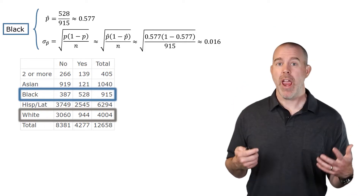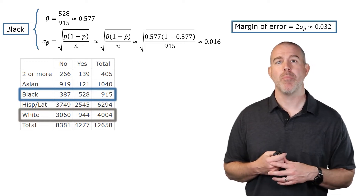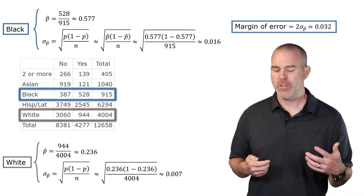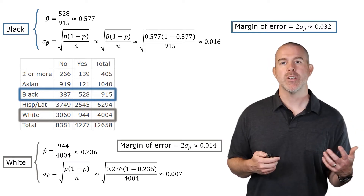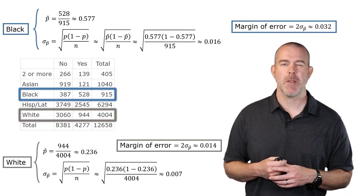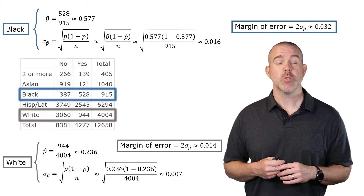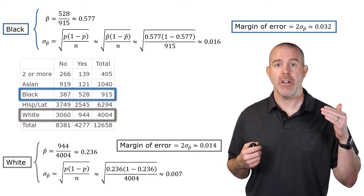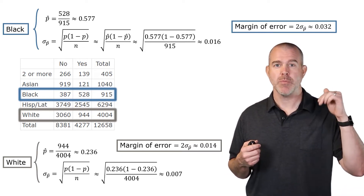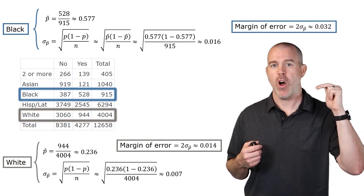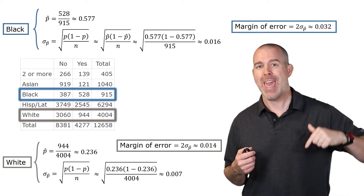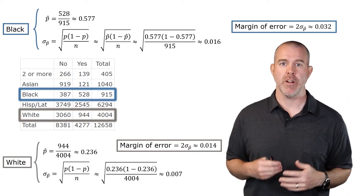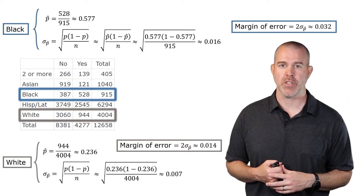So the margin of error for the black students' confidence interval is about 0.032, or 3.2%. For white students, the margin of error is about 1.4%. The reason it's smaller is the much larger sample size — since the standard deviation formula divides by n, a larger sample size gives a narrower interval and a smaller margin of error.